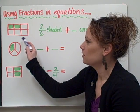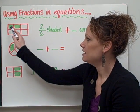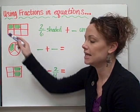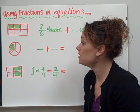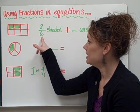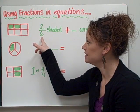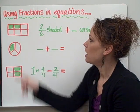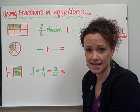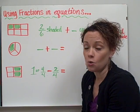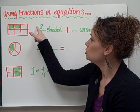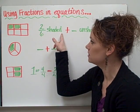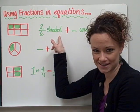We have a rectangle here that's divided up into 6 equal parts. So that lets me know that my denominator is going to be 6. Now for this example, 2 of those boxes are shaded.